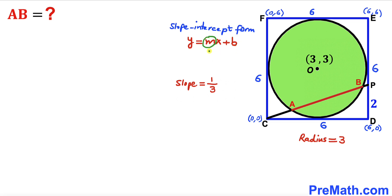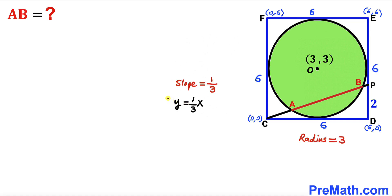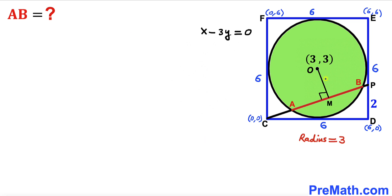Recalling the slope-intercept form y = mx + b, where m is the slope and b is the y-intercept: our slope m is 1/3 and our y-intercept b is 0. So the equation of line CP is y = (1/3)x. Multiplying both sides by 3 gives 3y = x, and rearranging gives x minus 3y equals 0.